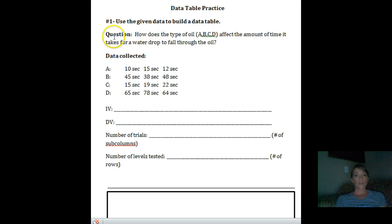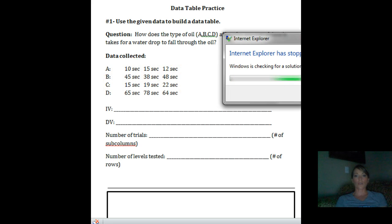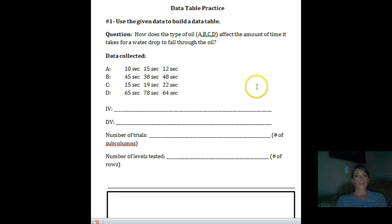And the very first question that we're investigating or looking at is, how does the type of oil, A, B, C, or D, there's no names for it, just letters, affect the amount of time it takes for a water drop to fall through the oil? So here's the data that was collected, A through D, and here are the different times that it took for the water to fall through the oil.